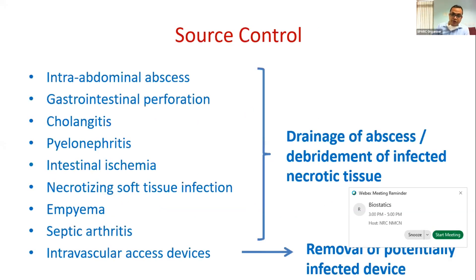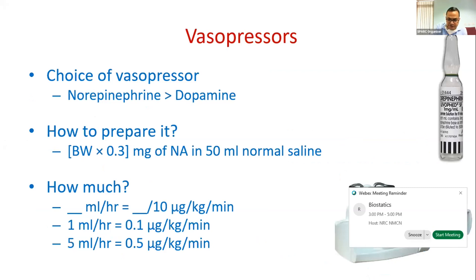Source control: wherever you identify the source — intra-abdominal abscess, GI perforation, cholangitis, pyelonephritis, intestinal ischemia, bowel gangrene, skin/soft tissue necrosis, empyema, septic arthritis, or infected intravascular devices — these need to be drained or removed as early as possible. The timing of source control will be discussed further.